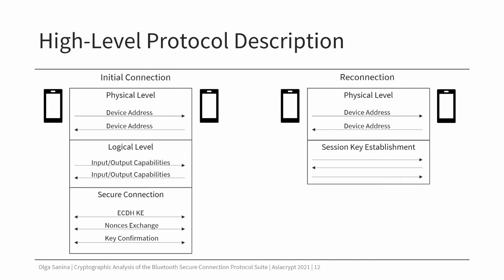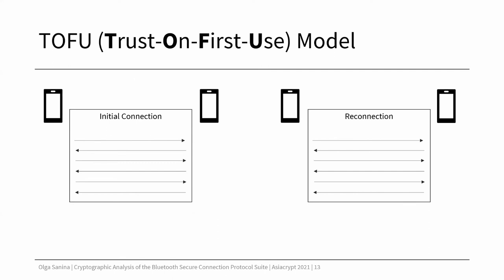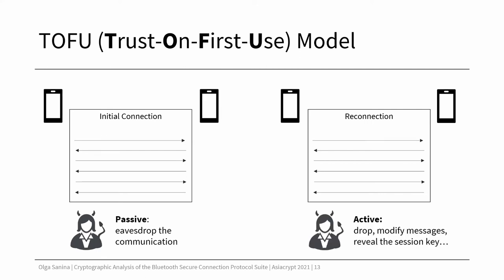This encryption key will then be used to encrypt the communication between the devices. Now, how does the Trust on First Use model work in this case? During the initial connection, the adversary stays passive and can only eavesdrop the communication between two devices. When the devices reconnect, the adversary can be active and affect the communication by modifying the messages, dropping them, revealing the encryption keys, and so on.